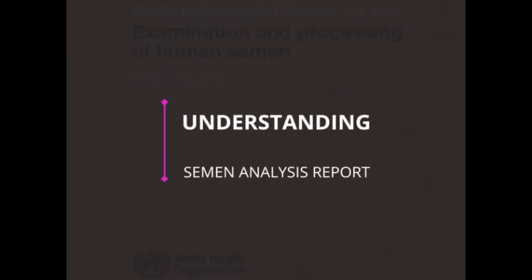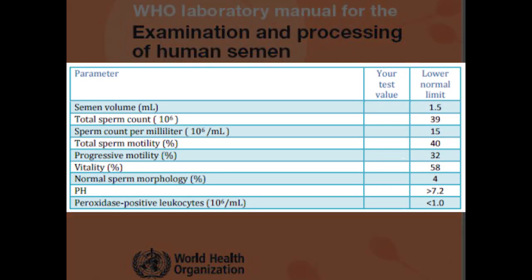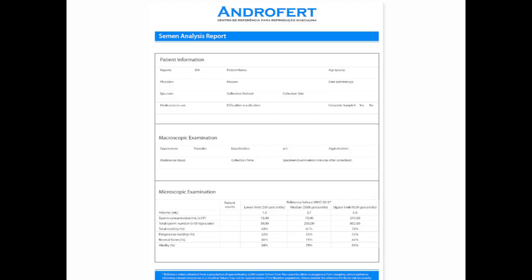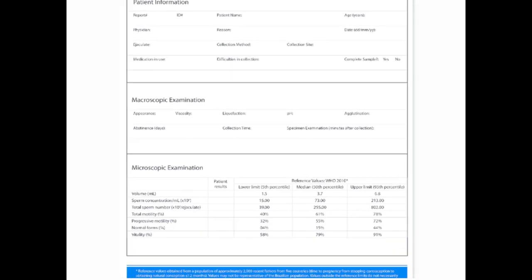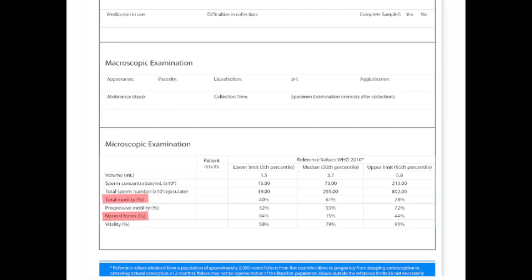So coming to interpretation and understanding of semen analysis reports. Reference values are highlighted alongside each specific parameter. If your test values are within the reference range, then everything appears to be normal. However, if the semen analysis reveals an abnormal finding, the exact parameter with the abnormal test value would be highlighted, on the basis of which the semen classification is done.